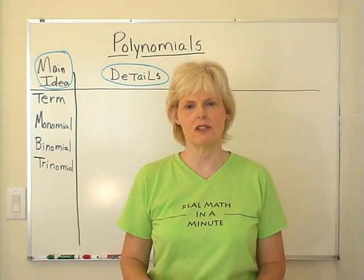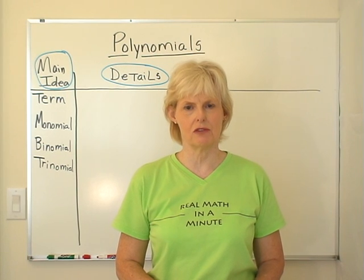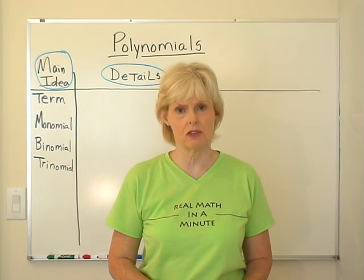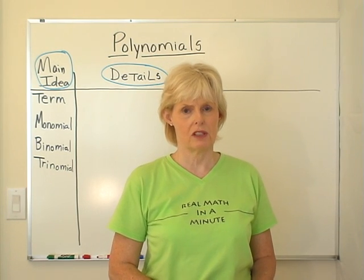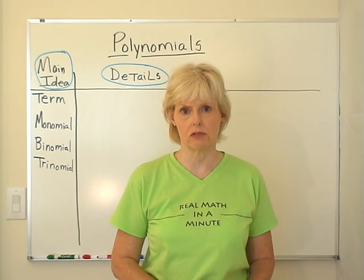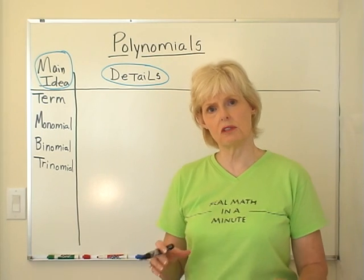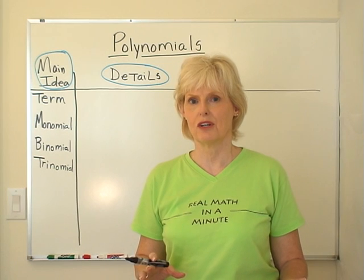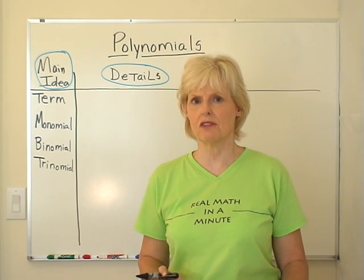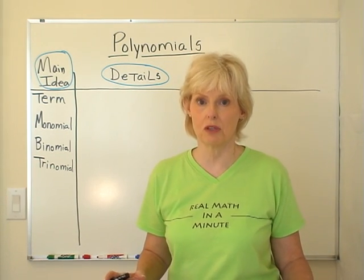The kind of strategy that I'm using in this segment is something that is called two column notes, and sometimes it's called Cornell notes. All that means is it is the way that the notes are organized because your brain works better when your work is organized in some way. And this is just one way.